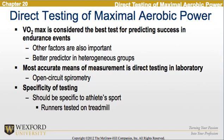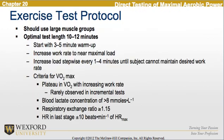The test should be specific to the athlete's sport — for example, runners tested on a treadmill. The exercise test protocol should use large muscle groups. Optimal test length is 10 to 12 minutes. You start with a 3 to 5 minute warm-up, then increase work rate to near maximal load, with stepwise increases every 1 to 4 minutes until the subject cannot maintain the desired work rate.